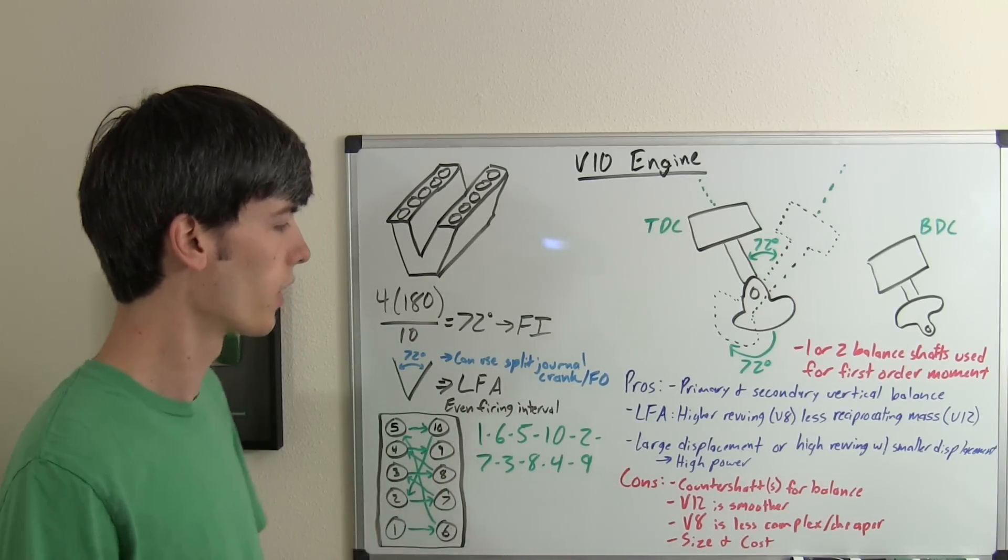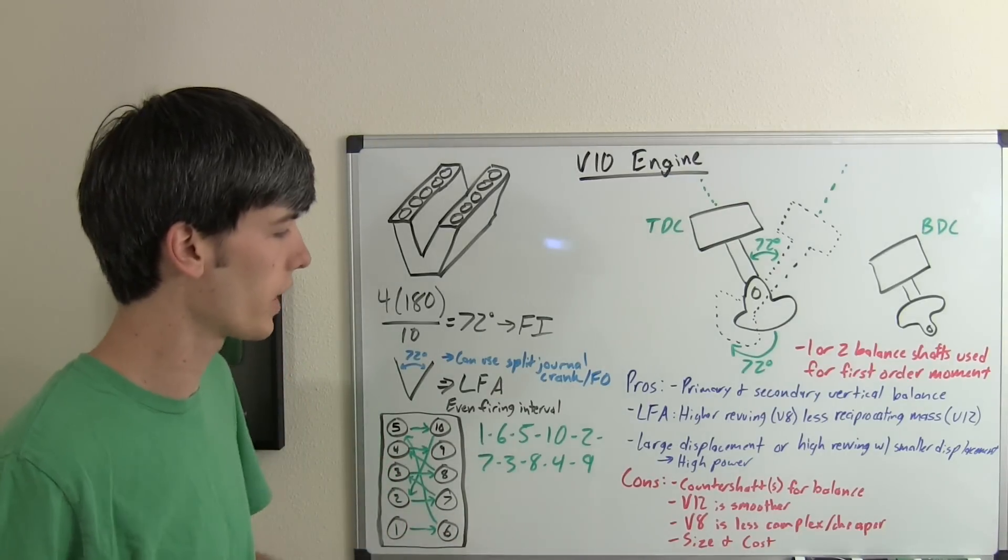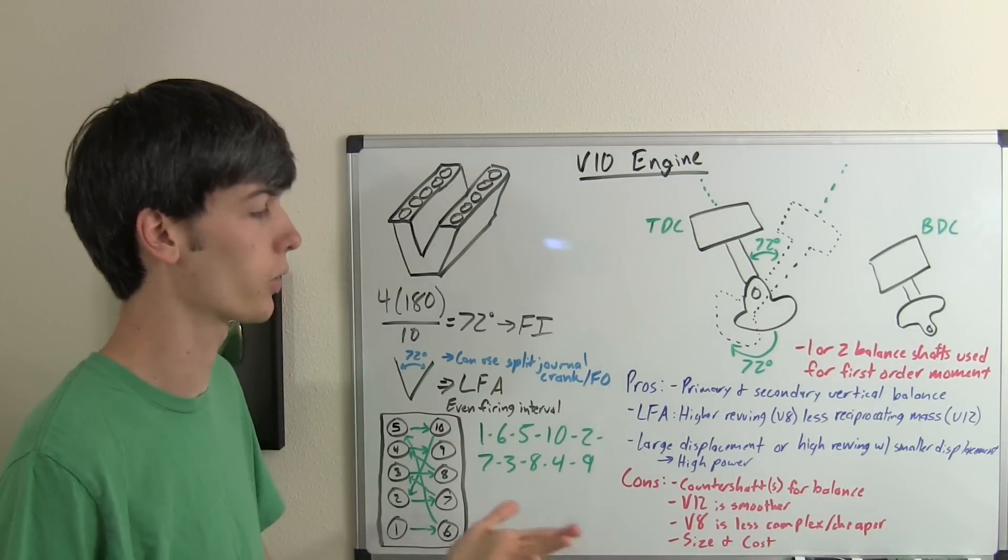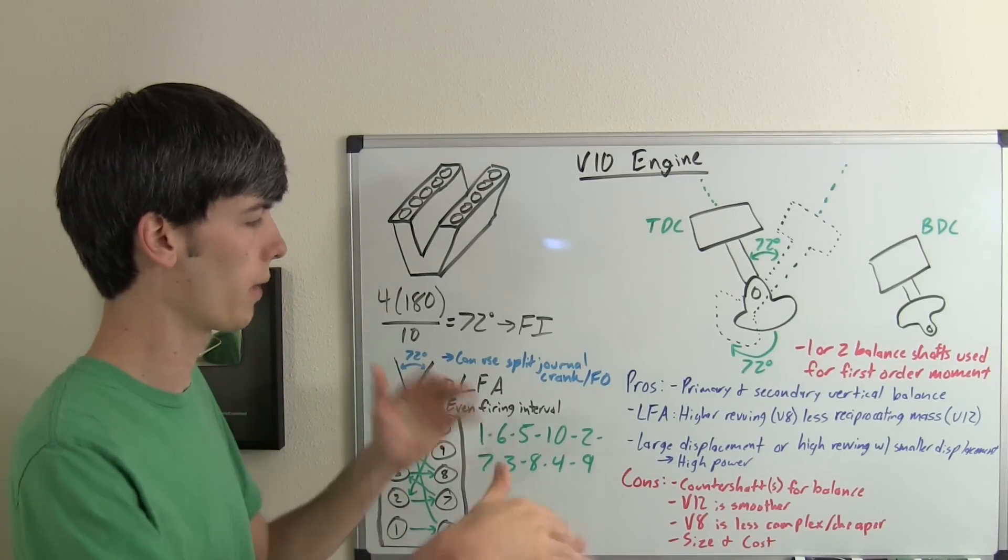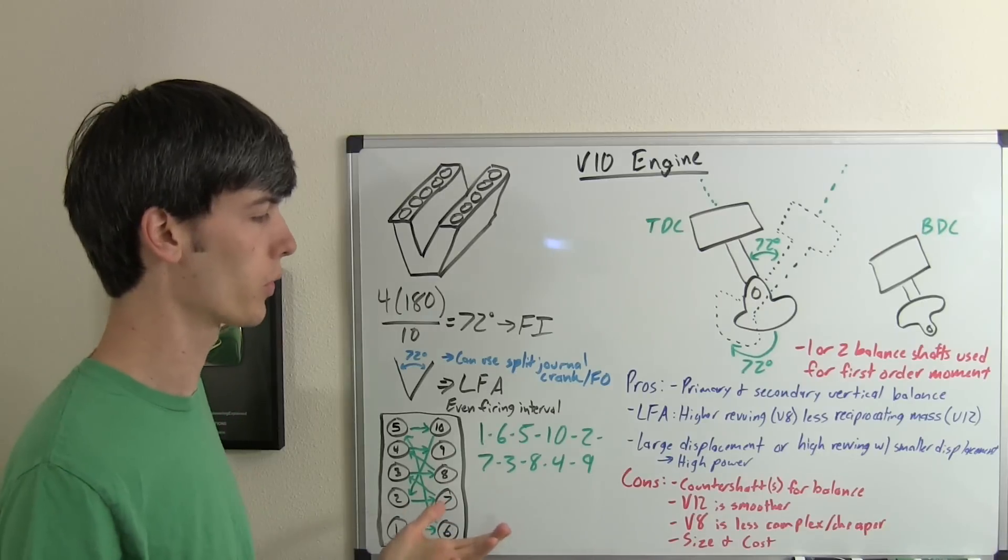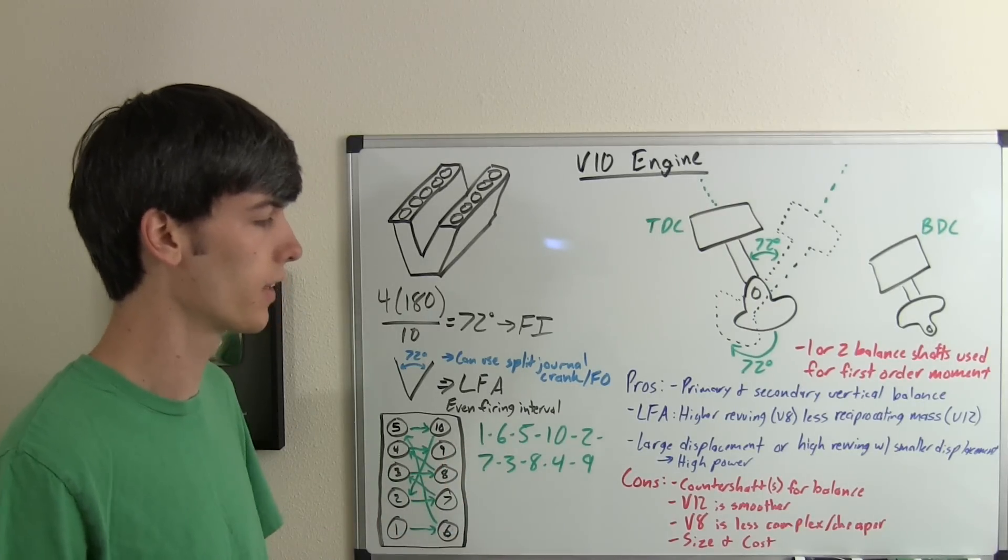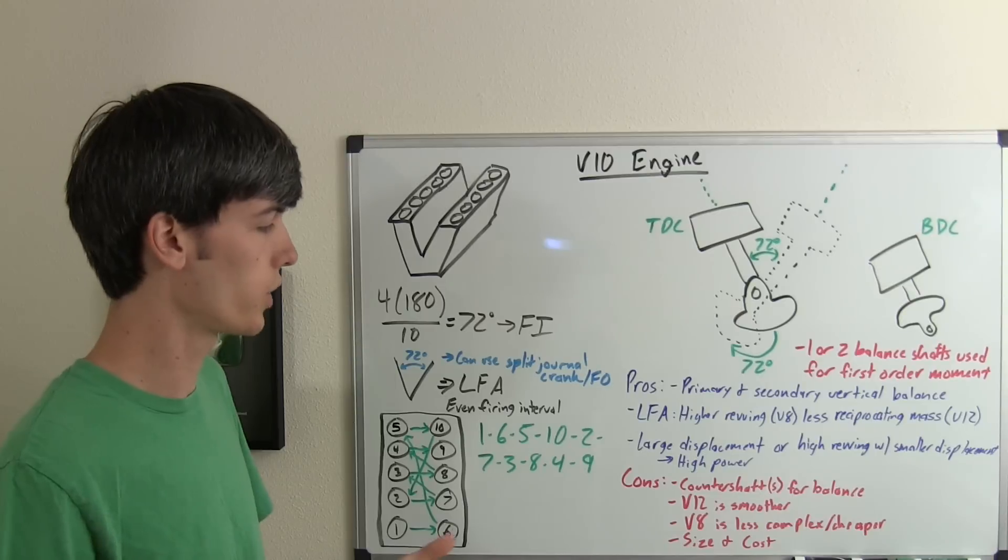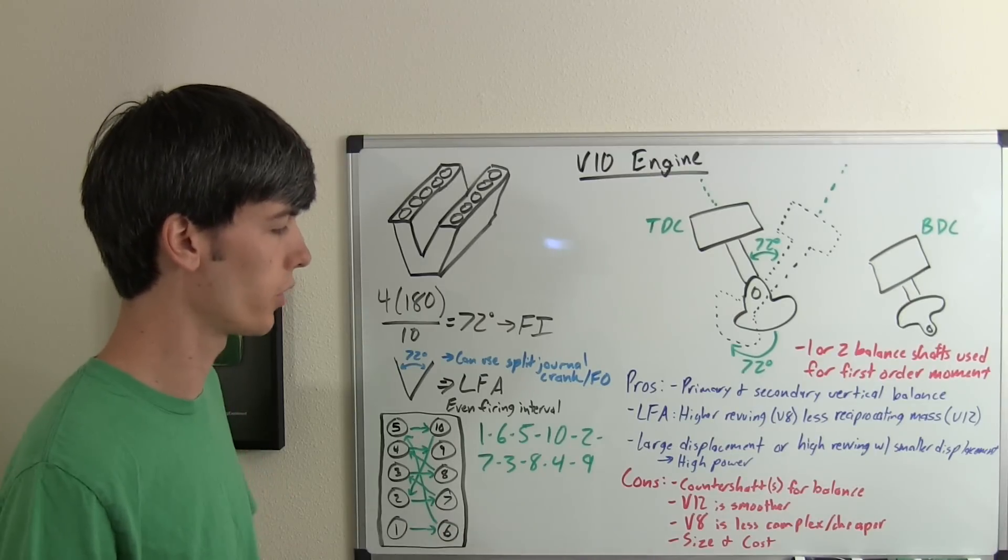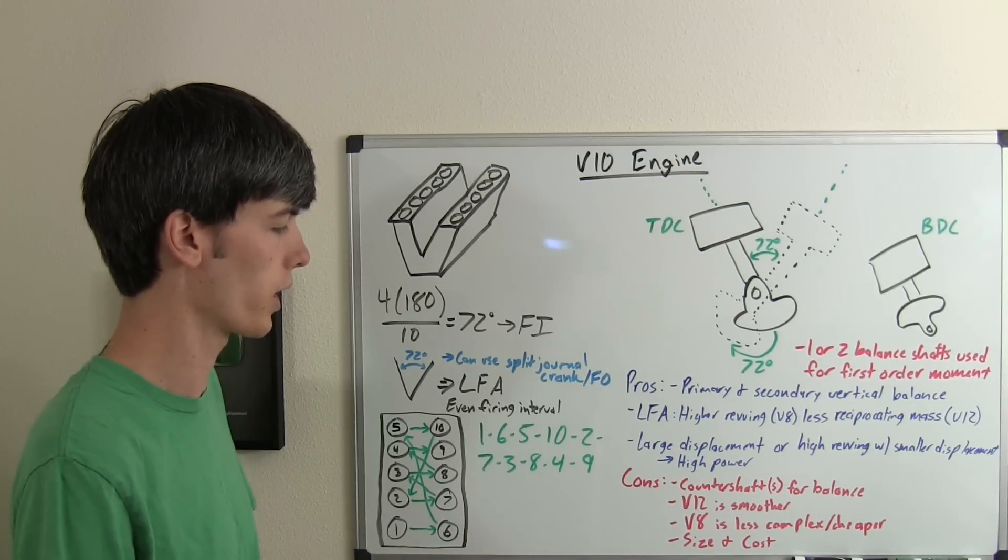Some of the disadvantages of a V10 engine: you have to have the countershaft or countershafts for balancing out that moment. The V12 is smoother and not all that more complex, versus the V8 is less complex and cheaper, so those are two options that may work for whatever you're trying to accomplish.